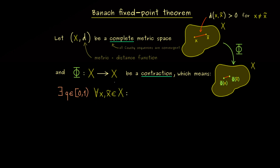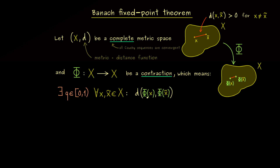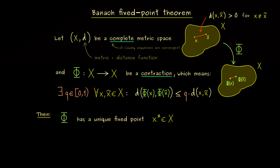So for all possible inputs x and x-tilde we measure the distance of the images — d(phi(x), phi(x-tilde)) — and this should be less than or equal to q times the original distance d(x, x-tilde). This is the correct definition of a contraction. It's stronger than just saying the distance gets smaller and smaller, because we have a fixed scaling constant q, and this is what guarantees us that we find a fixed point.